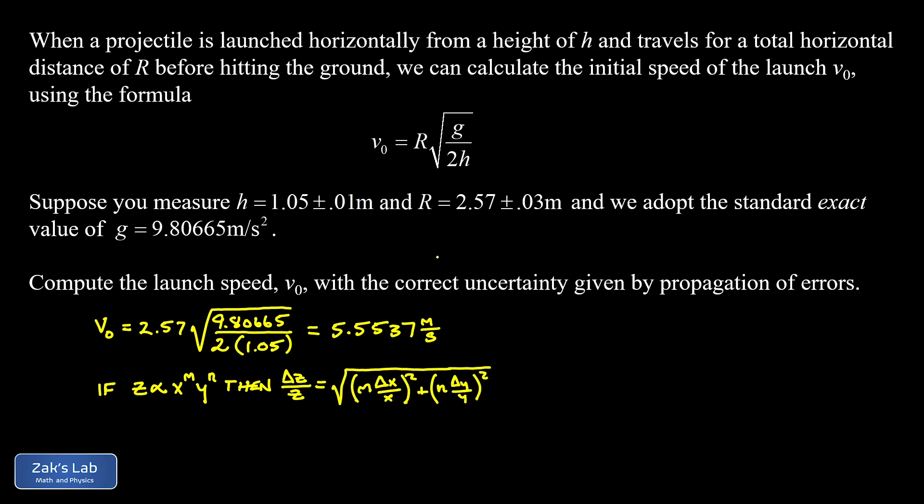So if we apply that idea to the context that we're looking at here, we have two measured variables, and that was R and h. So we can say v₀ is proportional to R to the first power, and then an h to the negative one-half power, because it's in the denominator inside of a square root. And then remember the g, we're considering that to be exact, so we don't have to worry about any contribution to the uncertainty coming from g.